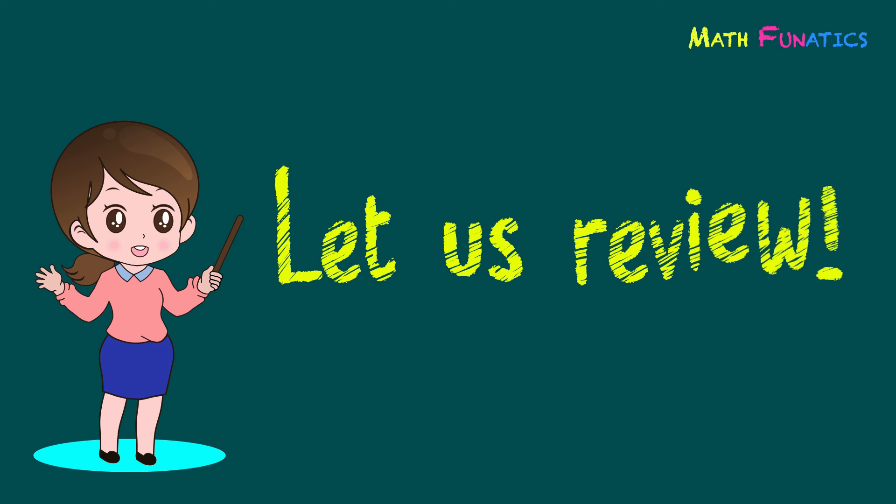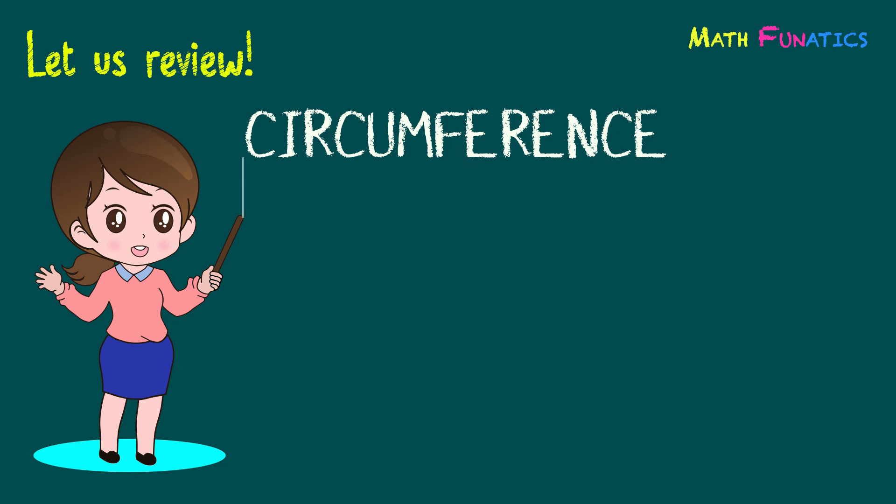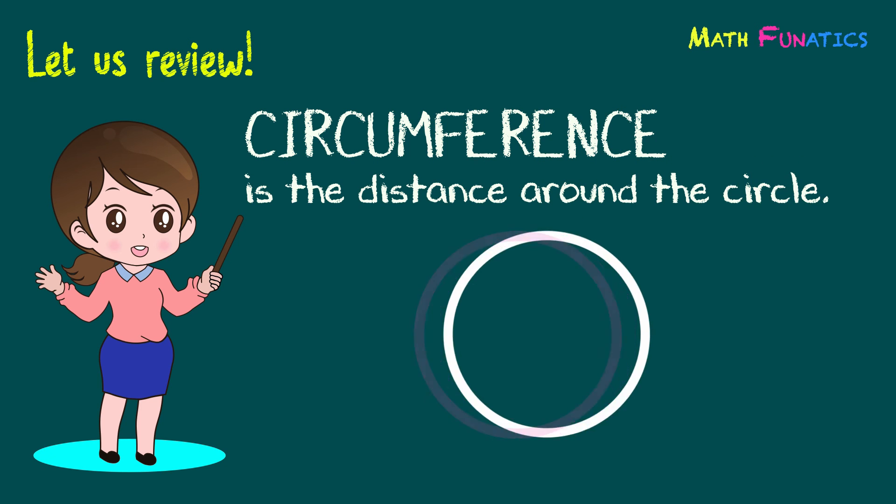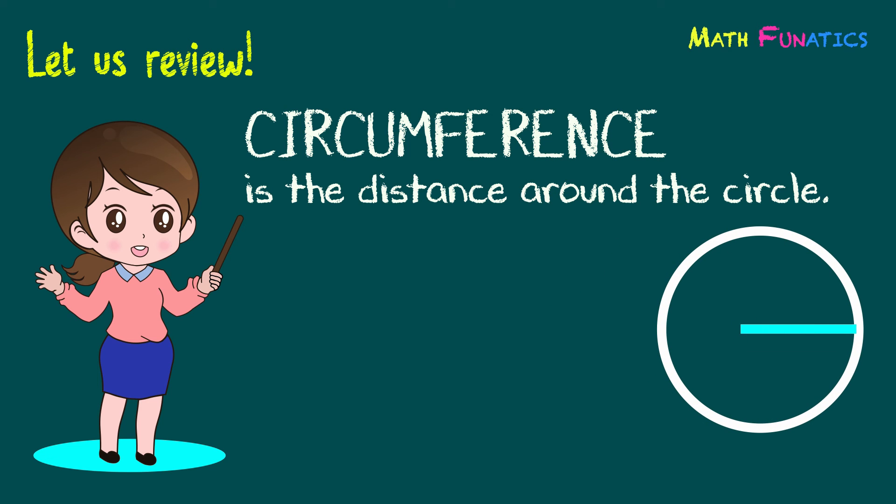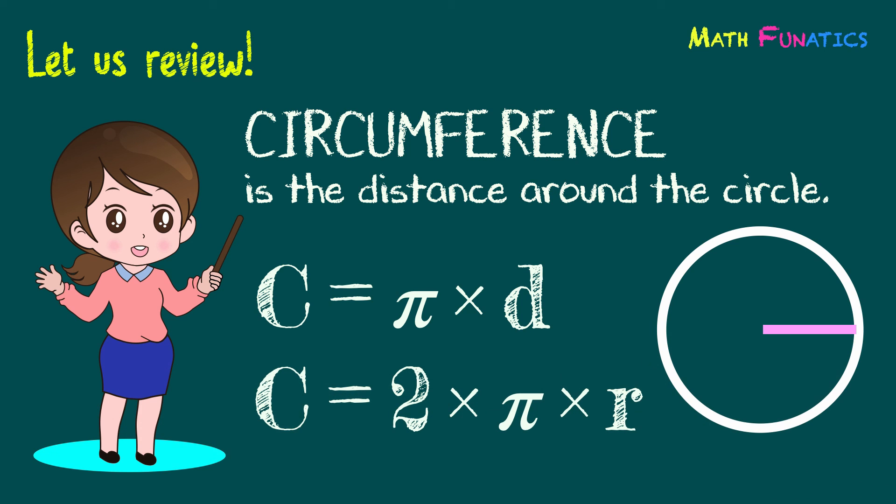Now let us review and make a recap of what you have learned today. Circumference is the distance around the circle. If the diameter of the circle is given, use C equals pi times D. But if the radius of the circle is given, use C equals 2 times pi times R. For both formulas, we use 3.14 for the value of pi.